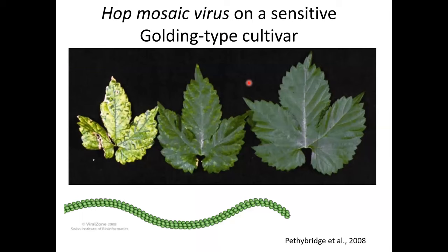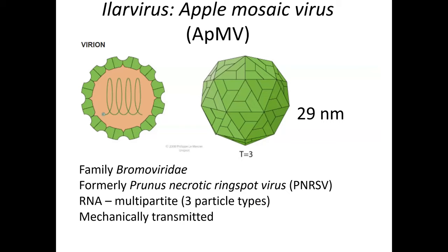The two Carla viruses with the word 'latent' in their names don't tend to cause dramatic symptoms on the plant. Hop mosaic virus, with 'mosaic' in its name, can cause patterning on some sensitive cultivars, particularly golden types. But the general take-home is that with all virus infections, we can't rely on symptoms in the leaves. We can have infection without anything being really obvious to us.